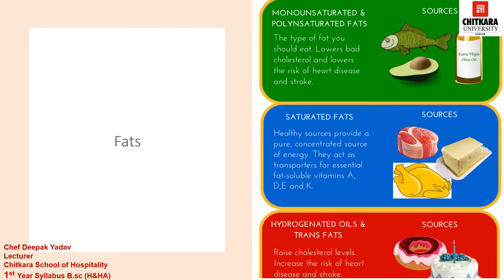A healthy fat source provides a pure concentrated source of energy. Fats act as transporters for essential fat-soluble vitamins A, D, E and K. You will get this fat from chicken and from beef. The other kind of fat is hydrogenated oil and trans fats. We should avoid this kind of fat because it is not a healthier source — it increases the risk of stroke and heart diseases.